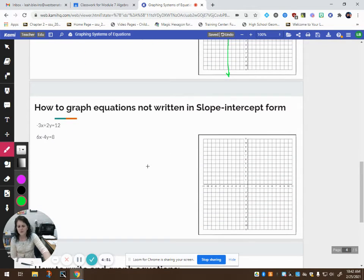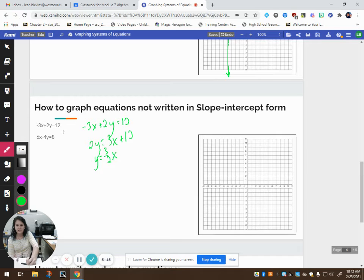Go ahead and pause the video and try this one. So again, what I want to do is begin by getting them written in slope intercept form. So I'm going to move the 3x over to the other side by adding it to both sides. So I have 2y equals a positive 3x plus 12. Then I'm going to divide everything by 2. So y equals 3 halves x, 12 divided by 2 is a positive 6.